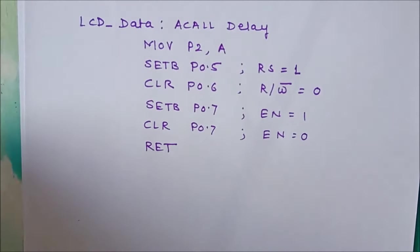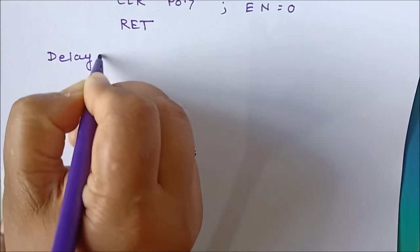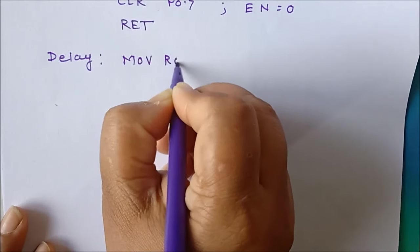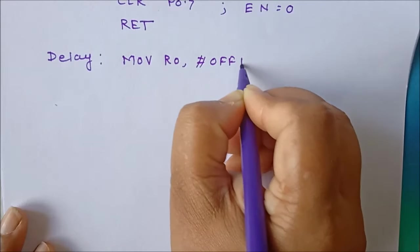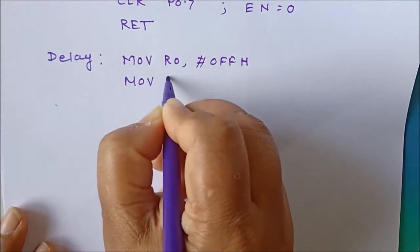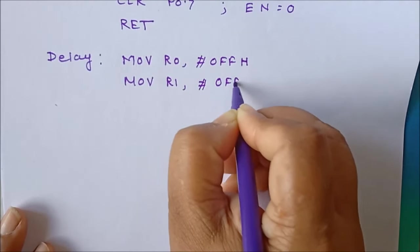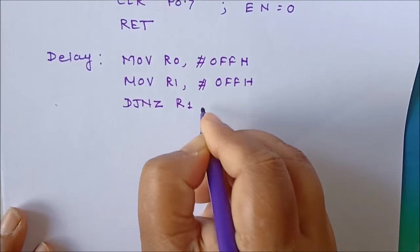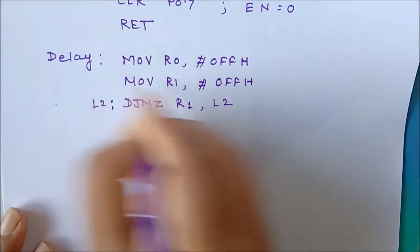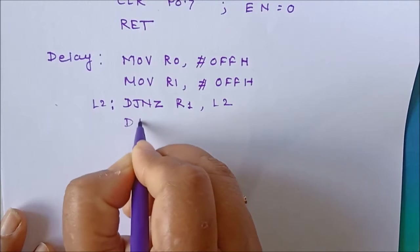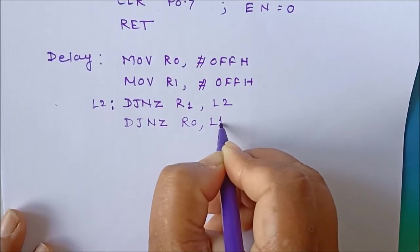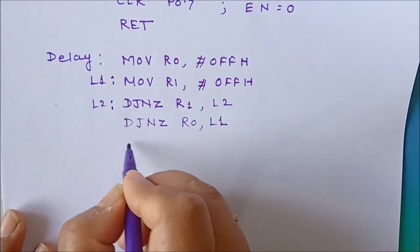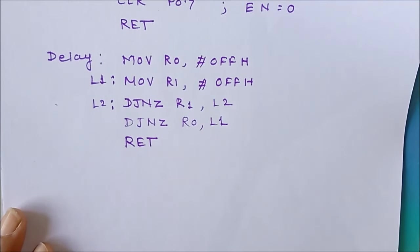Since we are using a delay subroutine, we now write a short delay program. We use two registers: R0 is initialized to FFH for maximum count, and R1 is also initialized to FFH. We use DJNZ R1, L2 to loop until R1 becomes 0, then DJNZ R0, L1, where L1 is the outer loop label. This generates a maximum delay using two registers, and the last instruction is RET.